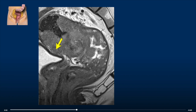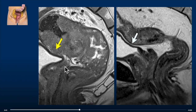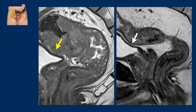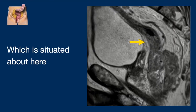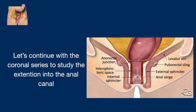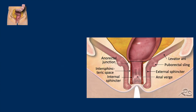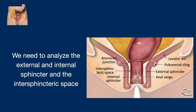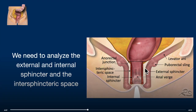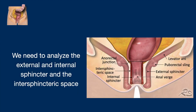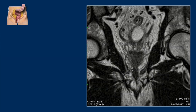In one case there is clear invasion of the peritoneal lining, while in another case the rectal wall is lying against the peritoneal lining but there is no invasion of the tumor beyond the rectal wall. Now let's go back to our case and continue with the coronal series to study the extension into the anal canal. We need to analyze the external and internal sphincter and the intersphincteric space, which is fatty tissue and bright on MR images.